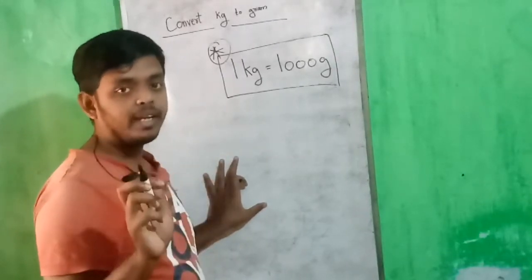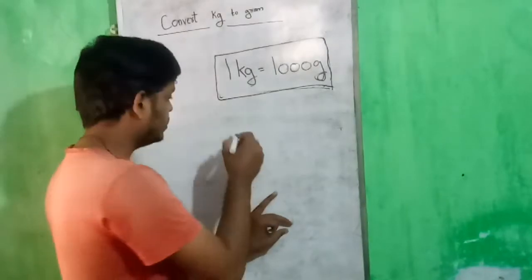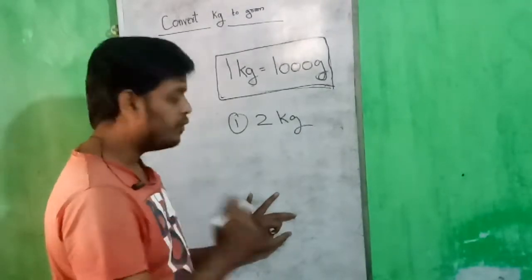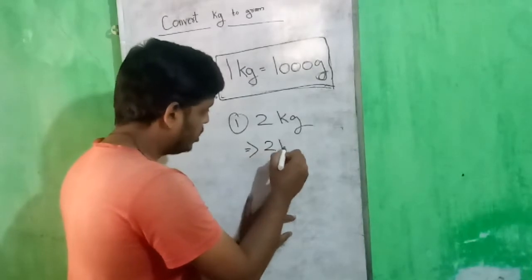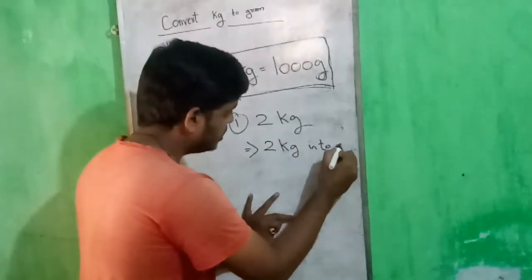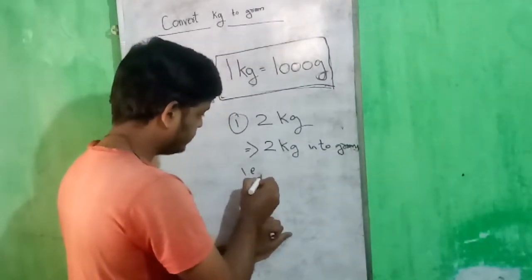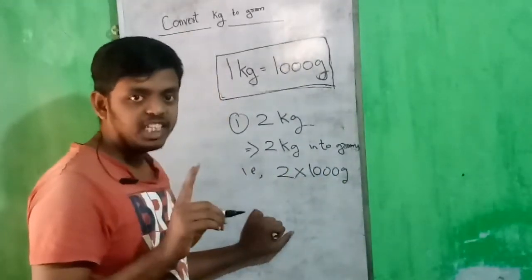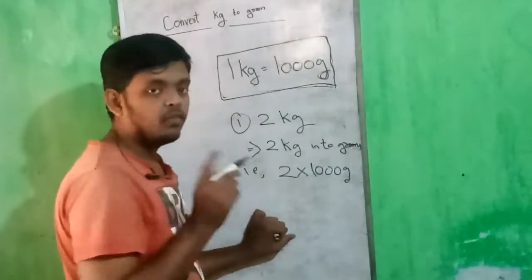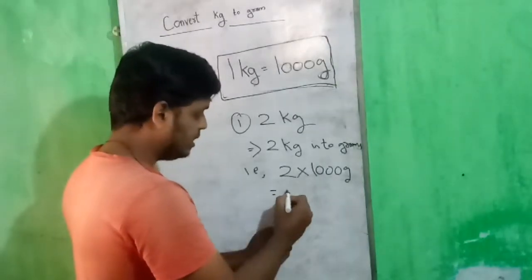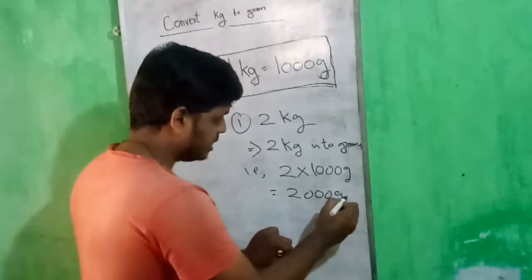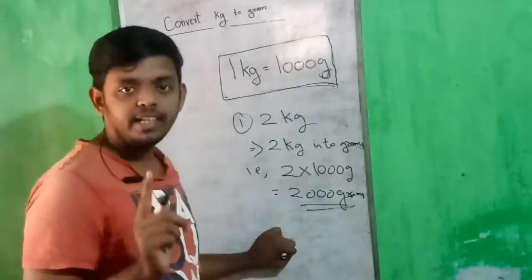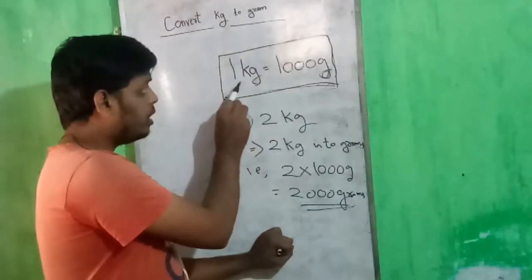There are some questions written on the board. Here is a question: 2 kg. How do we convert 2 kg into grams? That is 2 into 1000. As we know, 1 kg equals 1000 grams, so to find 2 kgs we multiply 2 with 1000, which gives us 2000 grams.